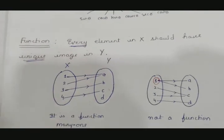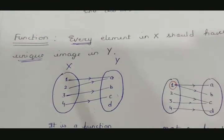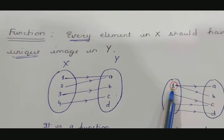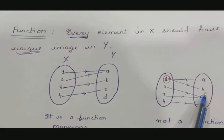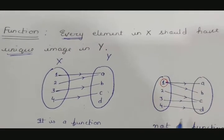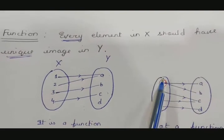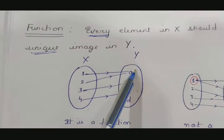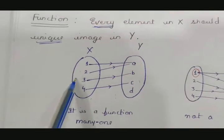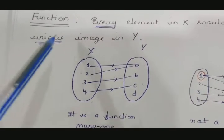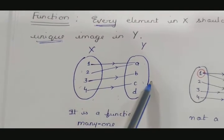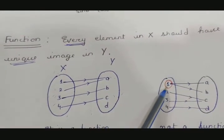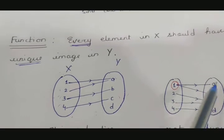A common doubt arises: 1's image is a and 2's image is also a — so is this not a unique image? It is still a unique image. Let's carefully re-read the definition: every element in x should have a single/unique image in y. In the non-function example, 1 has two images — a and b — so that is not a function, because every element must have a single image. Two elements can share the same image, but one element cannot have two images.